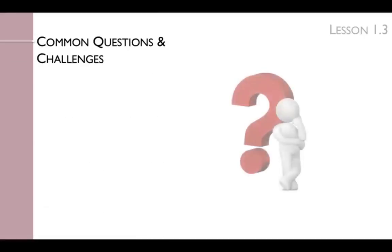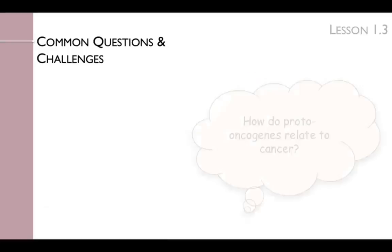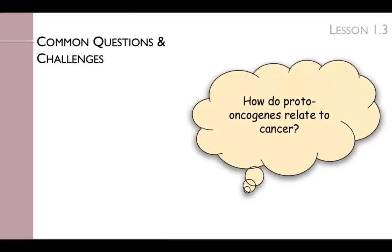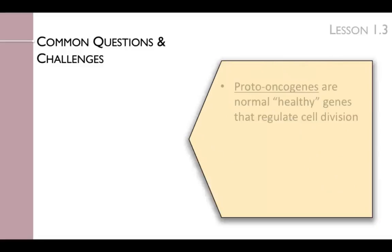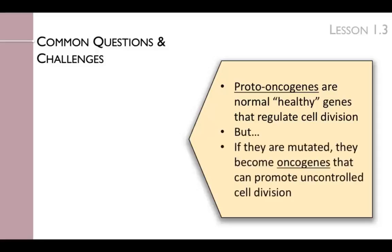One of the most common questions students have is how do proto-oncogenes relate to cancer? Proto-oncogenes are normal, healthy genes that regulate cell division, but if they are mutated, they become oncogenes that can promote uncontrolled cell division. Students will hear the terms proto-oncogenes and oncogenes in the next units.